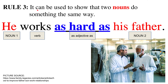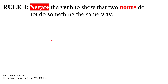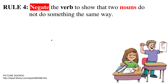In other words, 'as adjective as' can show that two nouns do something the same way. Here, they both work hard — they both do something, 'work,' the same way, 'hard.'